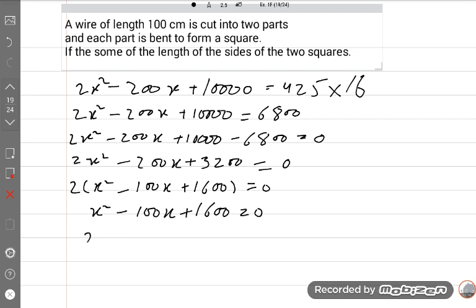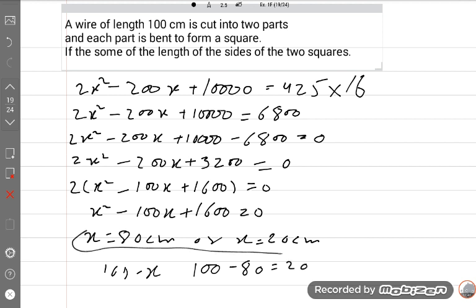x is equal to 80 centimeter or x is equal to 20 centimeter. If x is 80, then the second length will be 100 minus x, so 100 minus 80 is equal to 20.